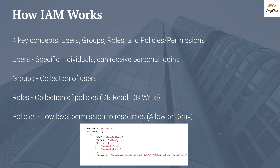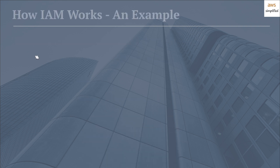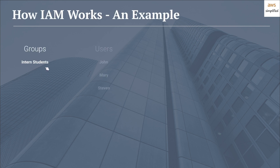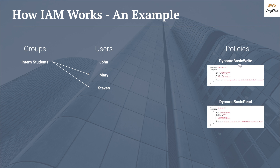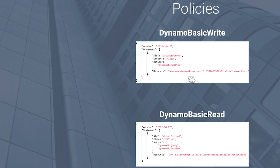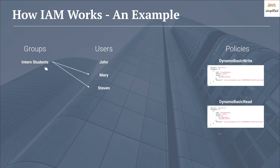Let's move on to a practical example of how an organization may set up IAM. In this example we're working with one group — a group of intern students — and we have three users: John, Mary, and Steven. Mary and Steven are intern students, so we want to give them more restrictive permissions. We have two policies: DynamoDB basic write, which gives the ability to perform a put item operation on a specific table, and DynamoDB basic read, which gives query and get item permissions on that table. We associate the group with the DynamoDB basic read permissions to give Mary and Steven access to the DynamoDB table, which is simple to do in the AWS console by going to the group section and adding the desired policy.